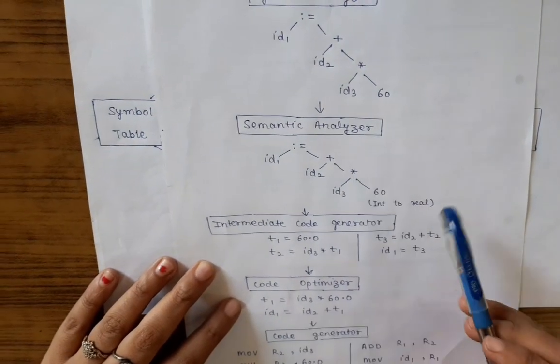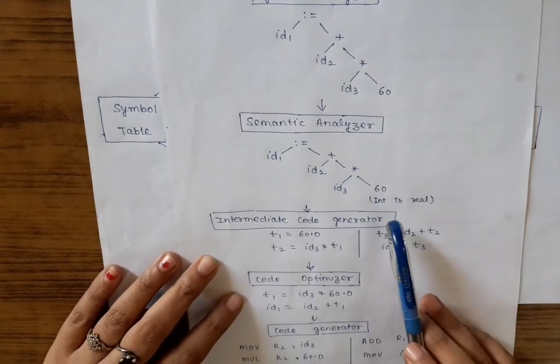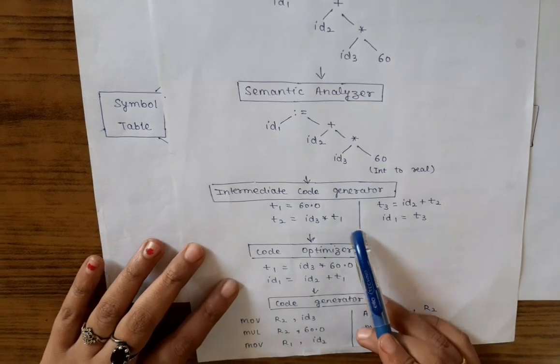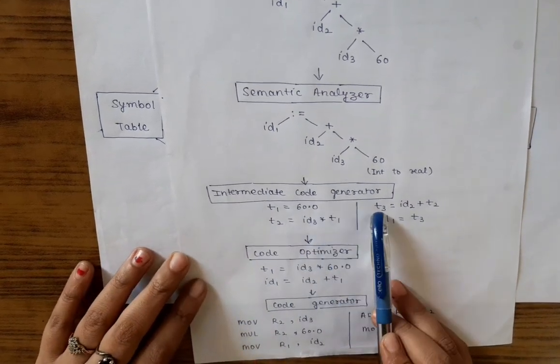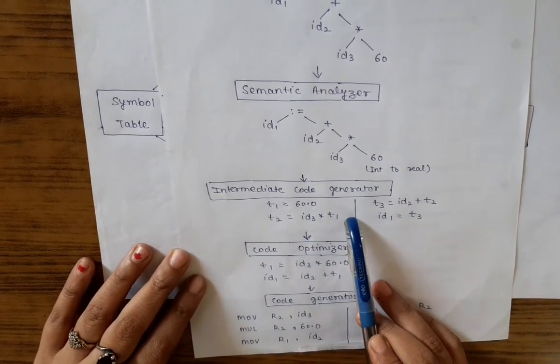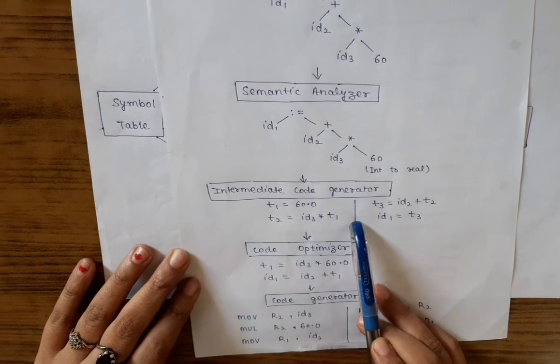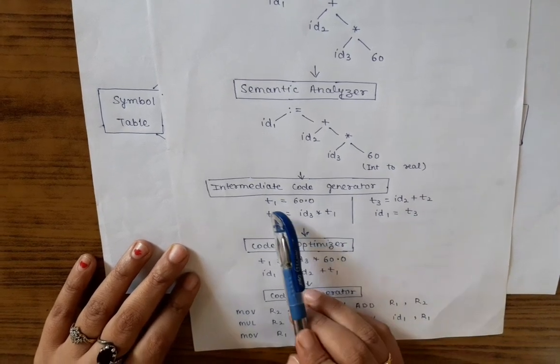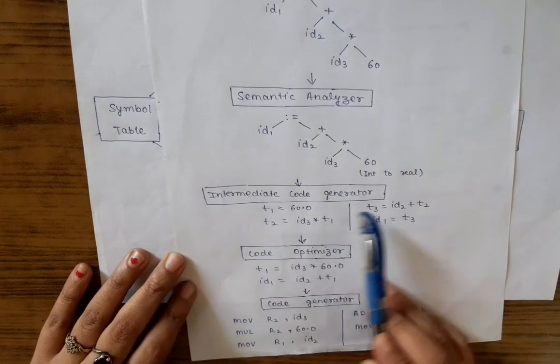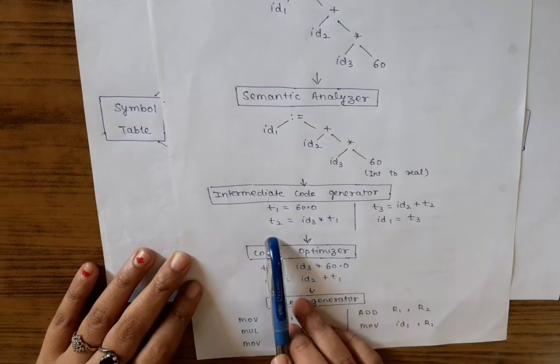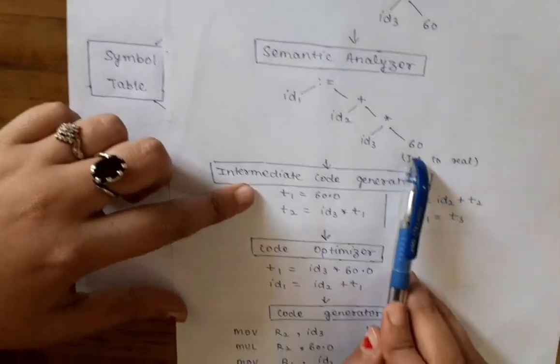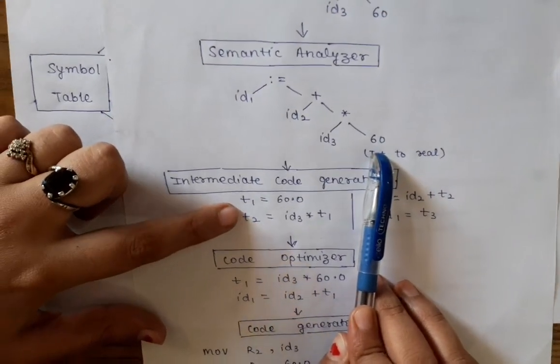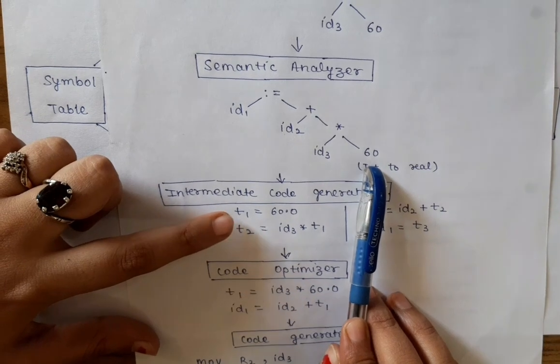The next phase is intermediate code generator. It generates the 3 address code with the help of temporary variables. Here T1, T2 and T3 are the temporary variables. First of all, we store 60 in the T1 that is temporary variable 1.